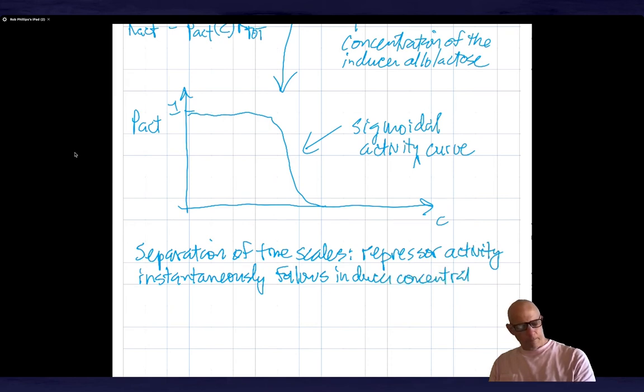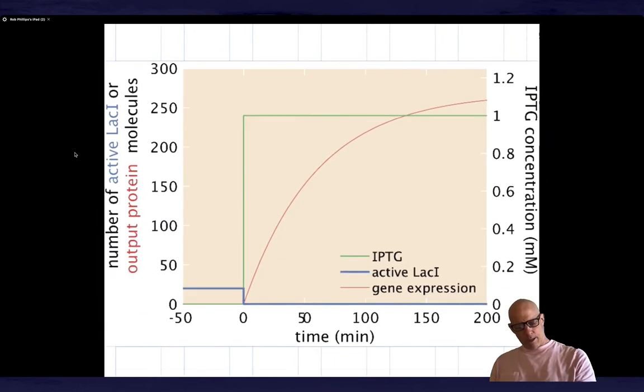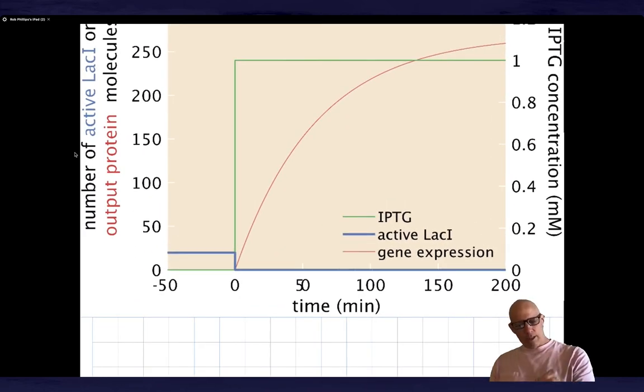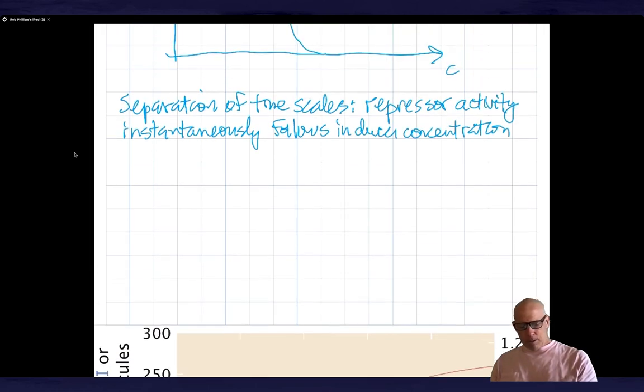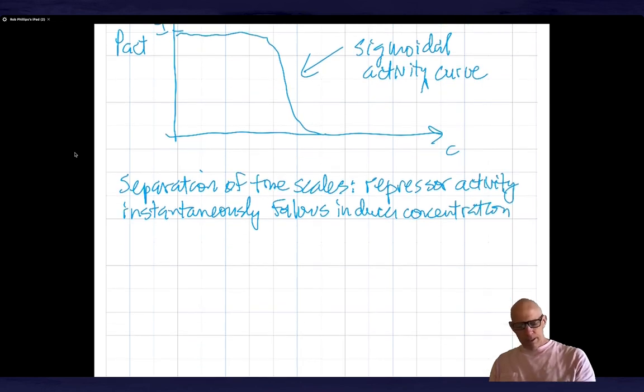Let me show you what I mean by that. Down here, what I want you to notice is, don't worry about this one just yet - this is the concentration of inducer, this curve. At t equals zero, the inducer is stepped up. What I want you to note is that instantaneously the number of active repressors drops to effectively zero. The point is that on the timescale at which the protein is produced from this gene, all the action having to do with induction happens instantaneously. There's no delay at all.